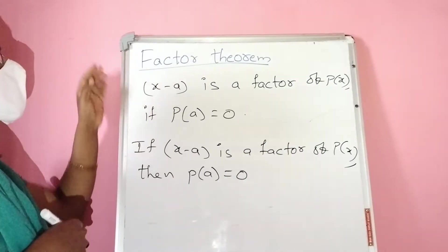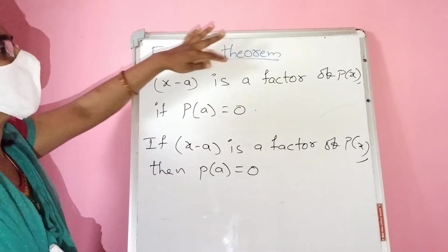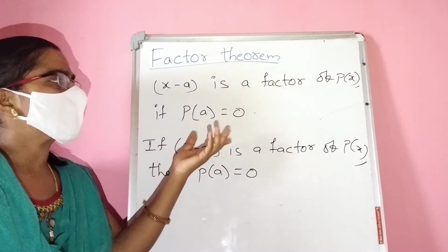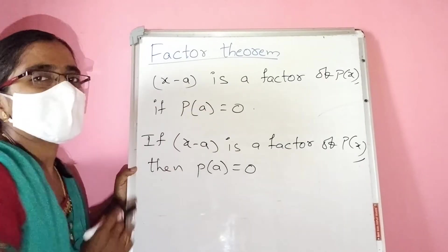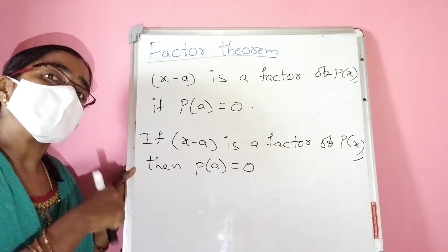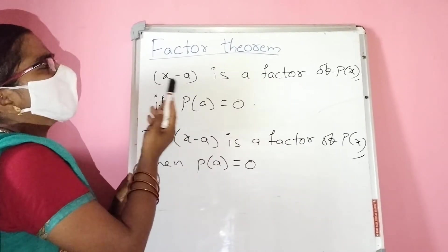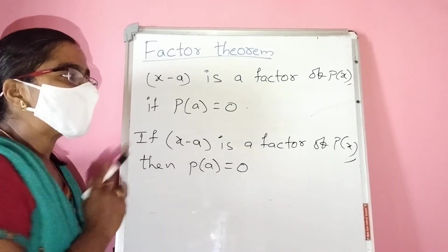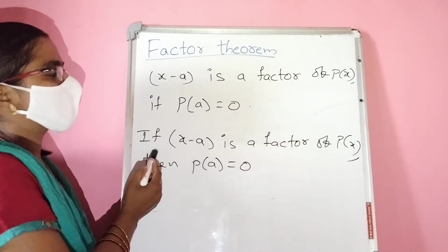Factor Theorem — in continuation of the Remainder Theorem. x minus a is a factor of p(x) if and only if p(a) = 0. If p(a) equals 0, then x minus a is automatically a factor of p(x). Conversely, if x minus a is a factor of p(x), then p(a) = 0. This is vice versa.